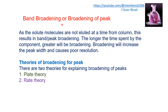Band broadening, or broadening of the peak, occurs because solute molecules are not eluted at the same time from the column. The longer the time spent by the component in the column, the greater will be the broadening. Broadening increases peak width and causes poor resolution. There are two theories for broadening of the peak: one is plate theory and another is rate theory. This video is about plate theory.